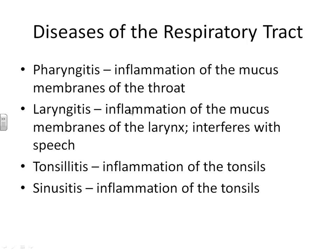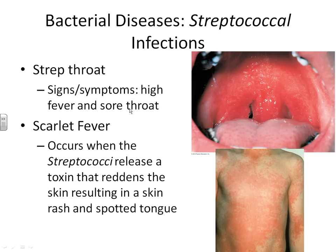Now let's look at a few specific diseases. Strep throat is the term we use for a streptococcus infection in the pharynx or the throat, and sometimes it can also occur in the tonsils. Strep throat is diagnosed with an extremely sore throat and a very high fever. The streptococcus that most commonly causes strep throat is called Streptococcus pyogenes.